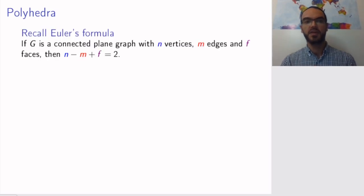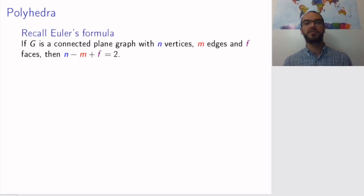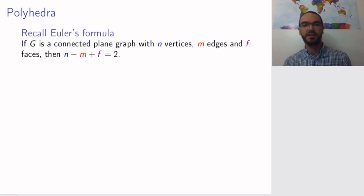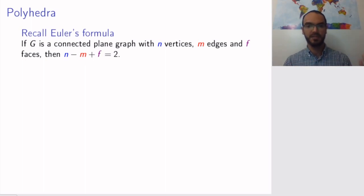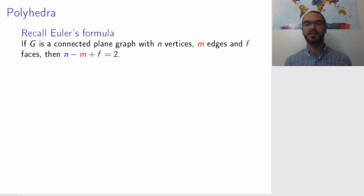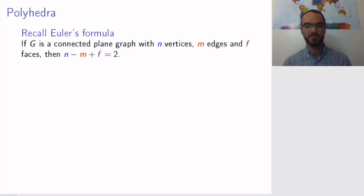Remember last time we saw this formula by Euler: if a graph is connected and a plane graph — so you can draw it on the plane without crossings — then the number of vertices, edges and faces satisfy this equation.